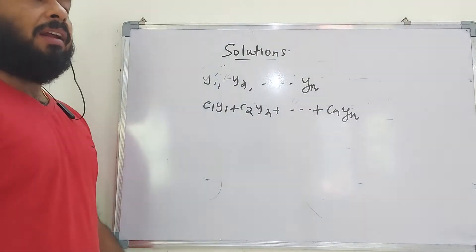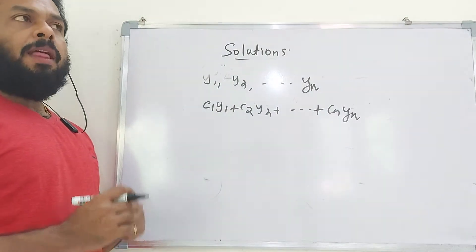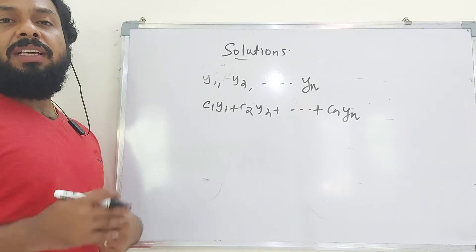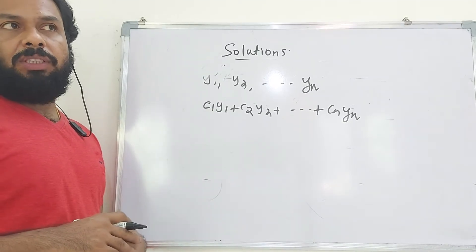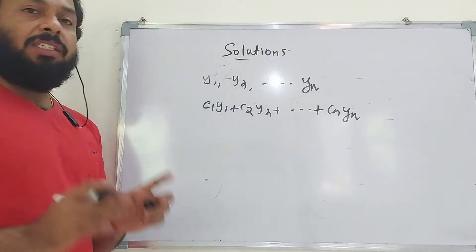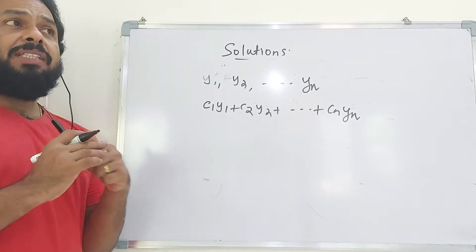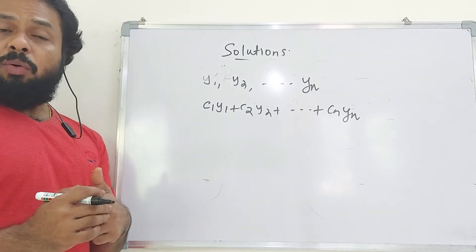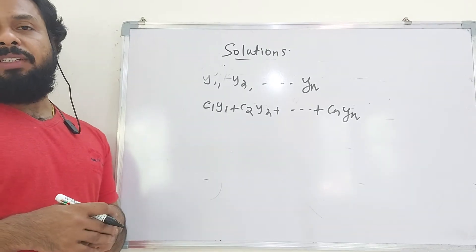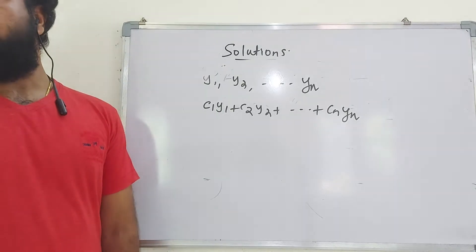The solutions are of two types: general solution and particular solution. If the differential equation is of order n and the solution includes n arbitrary constants, then it is called a general solution.